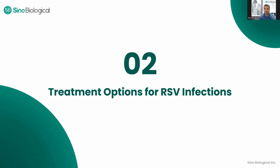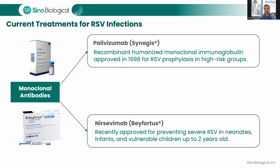The most effective treatment options for RSV infection are monoclonal antibodies. Palivizumab, or Synagis, is a recombinant humanized monoclonal immunoglobulin approved in 1998 for RSV prophylaxis in high-risk groups. It works by targeting the RSV fusion protein and preventing viral entry into host cells. Palivizumab is particularly recommended for premature infants and children with underlying health conditions. Nirsevimab, recently approved, represents a promising treatment for preventing severe RSV in neonates, infants, and vulnerable children up to two years old.